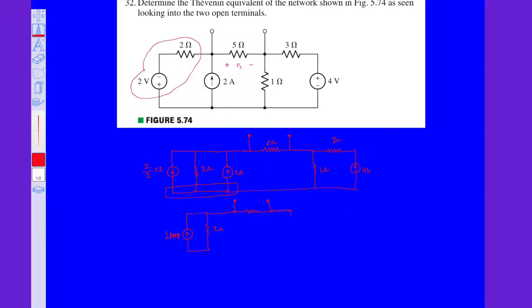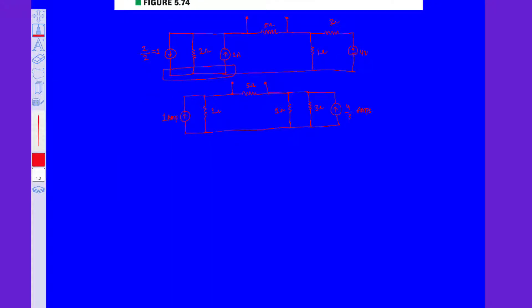Here also, if you apply source transformation to 4 volt voltage source, here it is 1 ohm, here it is 3 ohm, here it is 4 by 3 amperes. Here it is 5 ohm resistor. We need this voltage that is nothing but VTH. Let us take this is V1 node voltage, this is V2.